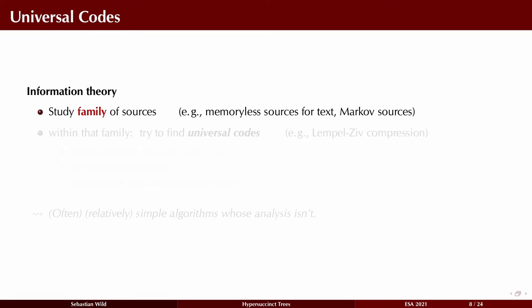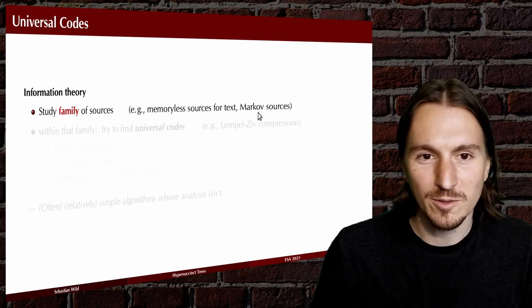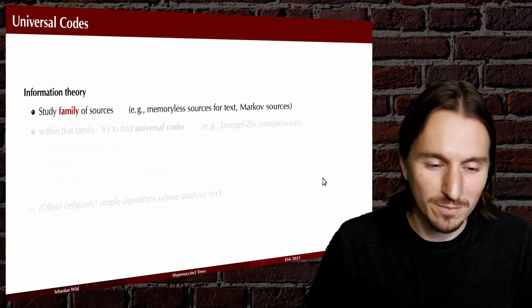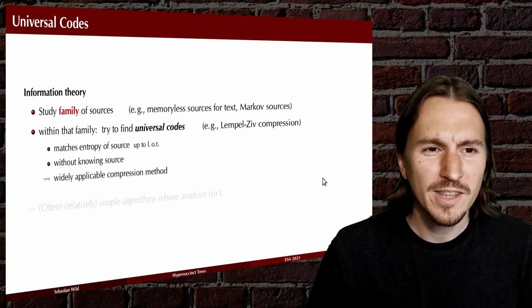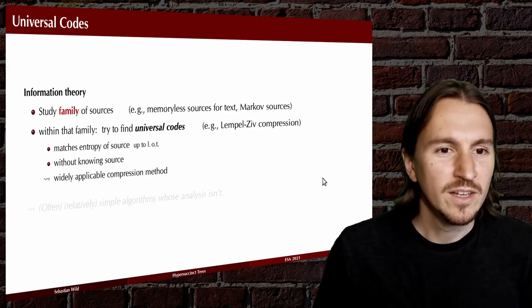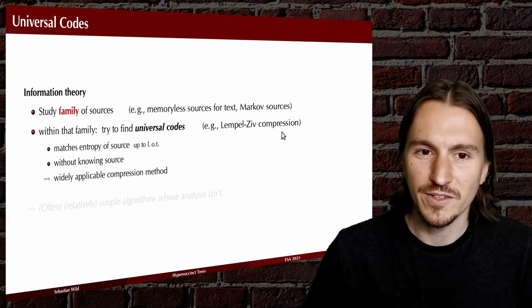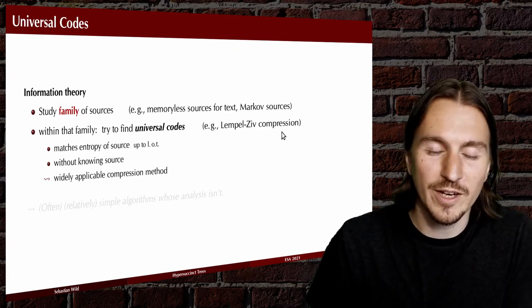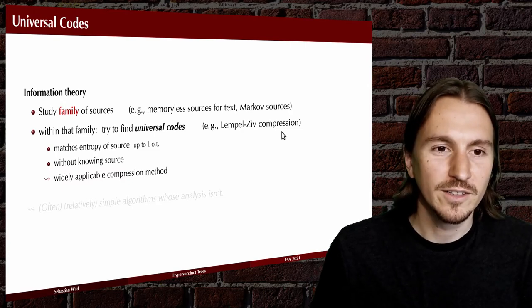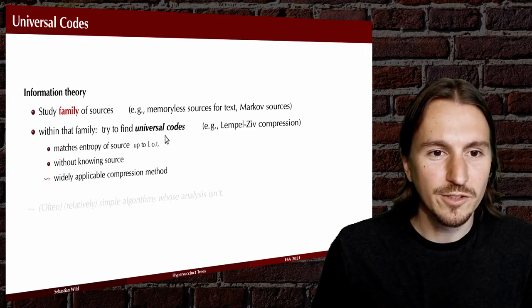In information theory we study families of sources — random sources for certain objects. The classical version has a memoryless source or Markov source for text that emits one symbol at a time, and then we try to find a universal source code for this family. The classical example from information theory is that the Lempel-Ziv algorithms are universal codes for Markov sources of text.